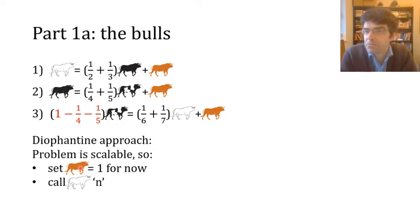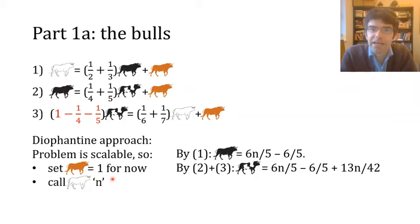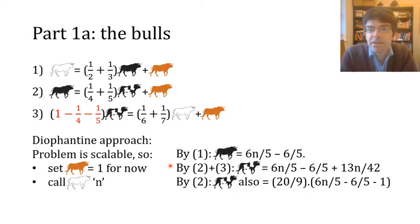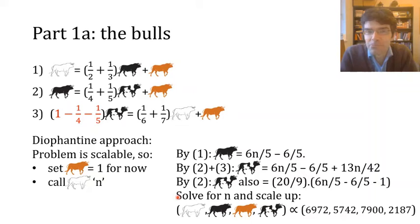So if we assign our unknown symbol, which we'll say is n, to the number of white bulls, then we work through the equations. We have the number of black bulls is 6n/5 - 6/5. The number of multicolored bulls, based on adding up the second and third equations, would come to 6n - 6n/5 - 6/5 + 13n/42. But if we calculate the number of multicolored bulls just based on the second equation, we also get that it's 20/9 multiplied by 6n/5 - 11/5. It's fairly elementary to get from these two equations, work out the fractions, and we find that n has the value 2324/729.